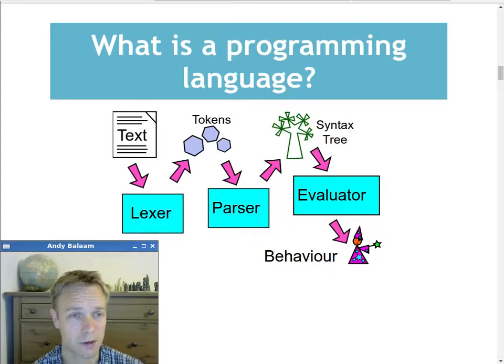And then the next step is that the parser takes in the tokens and produces a syntax tree, which is a kind of structure for those tokens that fits their meaning. And once we've got a syntax tree, at least in our interpreter, what we're then going to do is pass it on to the evaluator.